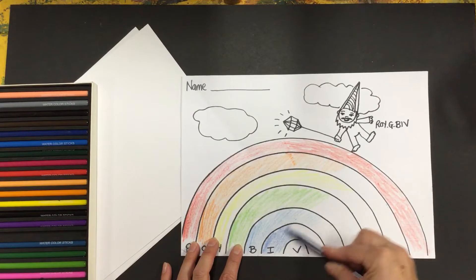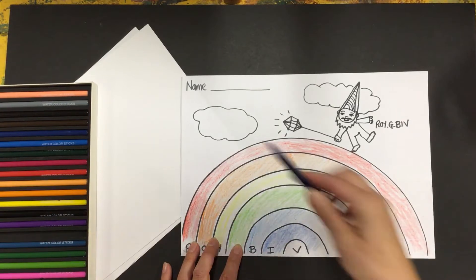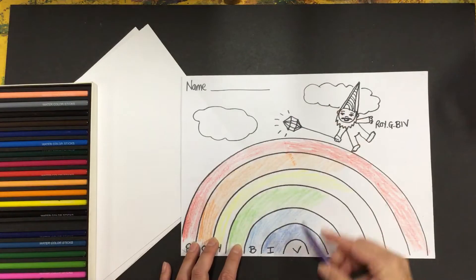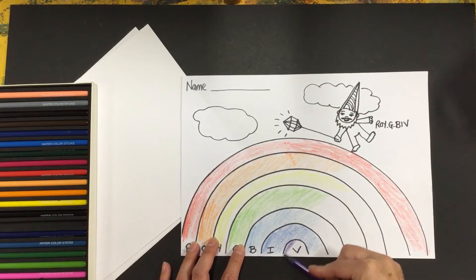So a darker blue is indigo and V is for violet. Another word for violet is purple. V is for violet.